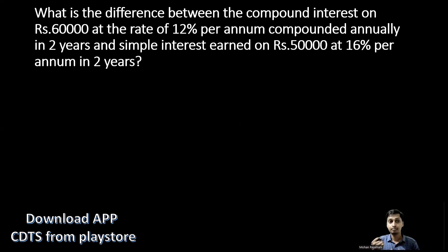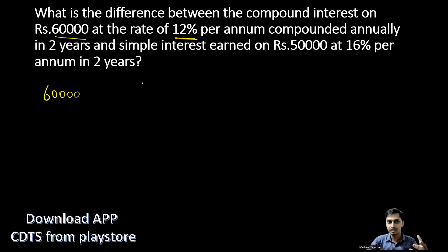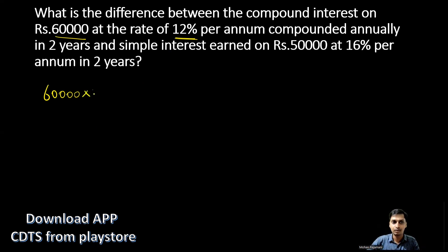This is very simple and we don't need any formula. The principal is 60,000 rupees, which is 100%. At 12% interest, after one year you get 112% of the principal. So multiply 60,000 by 112/100 to get the amount after year one. For compound interest, in the second year another 12% is added, so multiply again by 112/100. After cancelling the zeros, you need to compute 112 × 112.